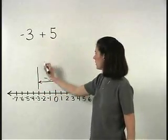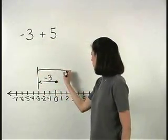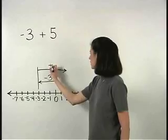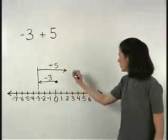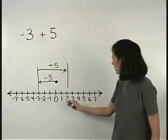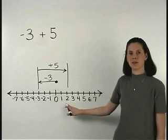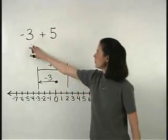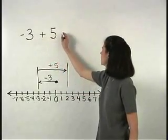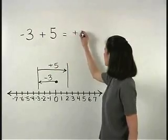positive 5 moves us 5 units back to the right. You can see that we end up at positive 2. So negative 3 plus 5 equals positive 2.